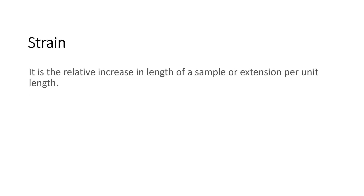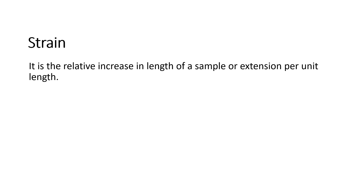And now, let us talk about strain. What is strain? It is the relative increase in length of a sample, or extension per unit length. Simply, it is the ratio of the change in length of the material with respect to its original length. So, we can say that strain is equal to change in length, that is delta L, over its original length, L sub-zero. It allows us to get a fair comparison between the amounts that the material is stretched. Take note, strain is a ratio and it is unitless.